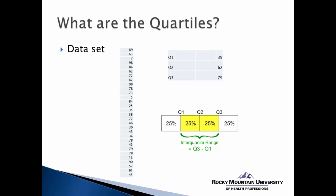We can also use the quartiles to determine something known as the interquartile range, which is basically taking the third quartile score — in this case 79 — and subtracting from that the first quartile score of 39. So we end up with an interquartile range of 40.